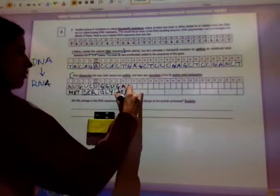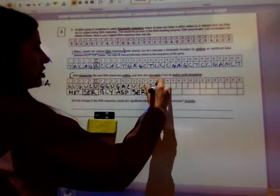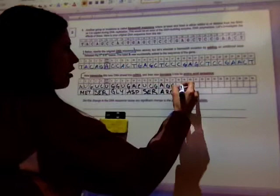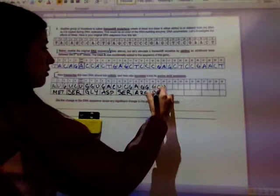Next, I have G, A, C. ASP. That looks like I have U, C, G. SER. A, G, G. ARG. G, C, U. ALA. C, G, A. ARG. G, G, C. GLY. U, U, G. LEU. And I have a left over A.